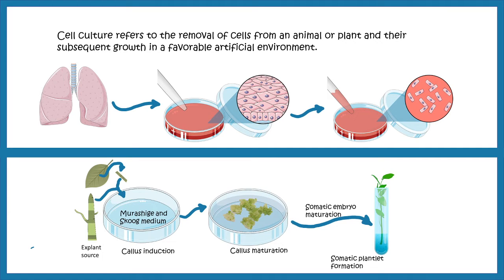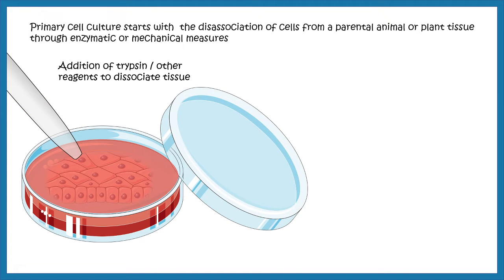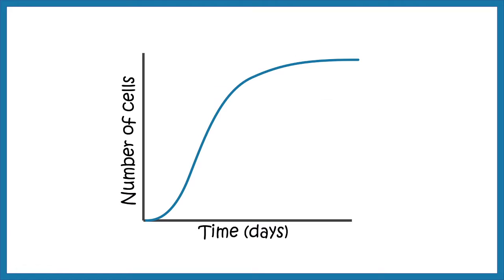We'll first learn about primary cell culture. Primary cell culture starts with the dissociation of cells from a parental animal or plant tissue. Enzymatic or mechanical digestion is performed to break down tissue organization and free the cells. Repeated pipetting with trypsin or enzymes such as acutase can break up tissue-like organization, ultimately creating a cell suspension. These cell suspensions are then plated onto specific media to support growth, giving us our primary cell culture.